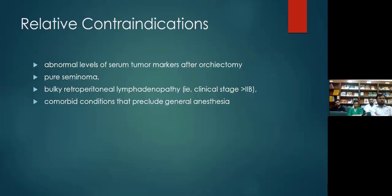There are relative contraindications: abnormal serum tumor marker levels after orchiectomy, pure seminoma, bulky retroperitoneal lymphadenopathy — that is, clinical stage greater than 2b. Stage 2b involves disease up to N1 stage, meaning greater than two centimeter mass or five or fewer lymph nodes. Beyond that, RPLND is not indicated.